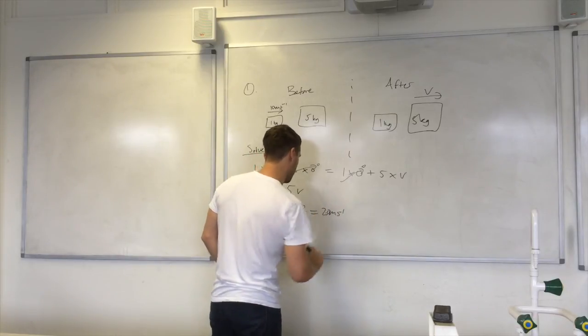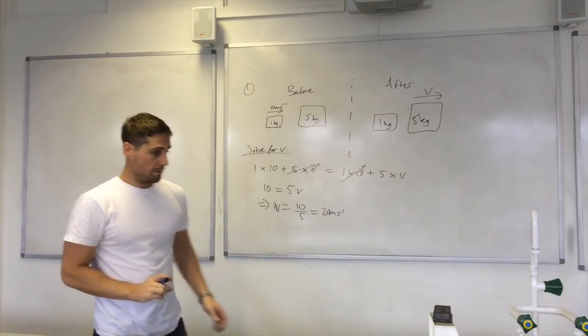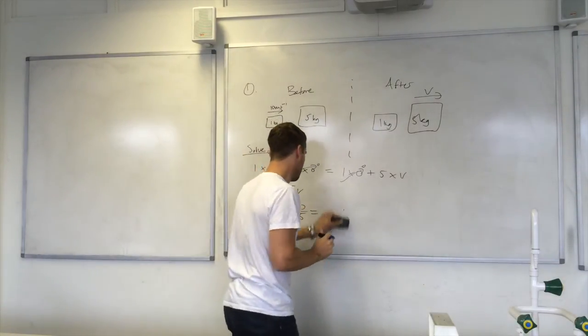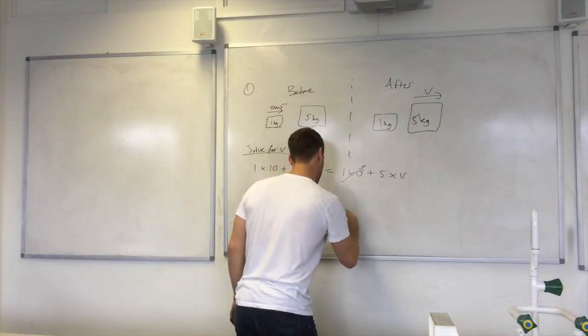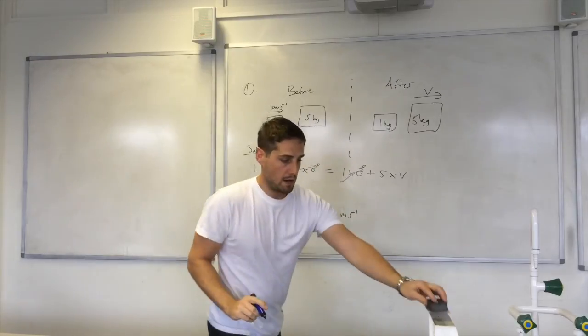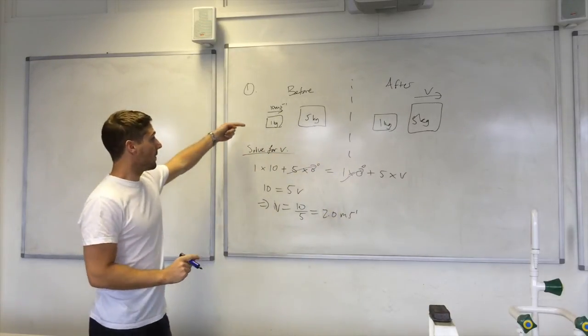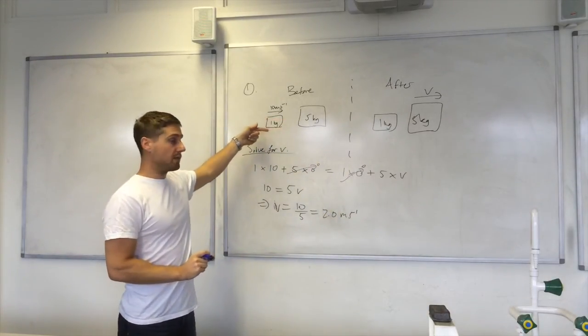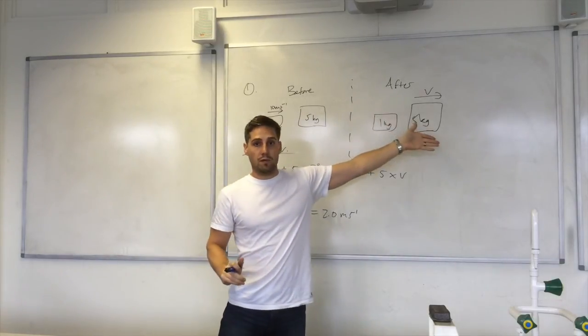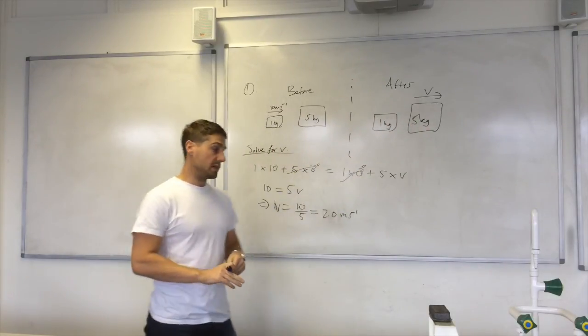V is equal to ten over five is two, two point zero. Okay, so this object came in at ten meters per second. This one moves off at two meters per second.